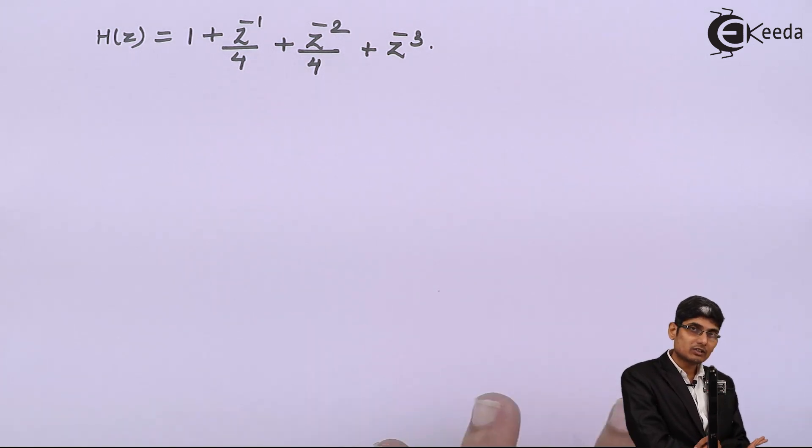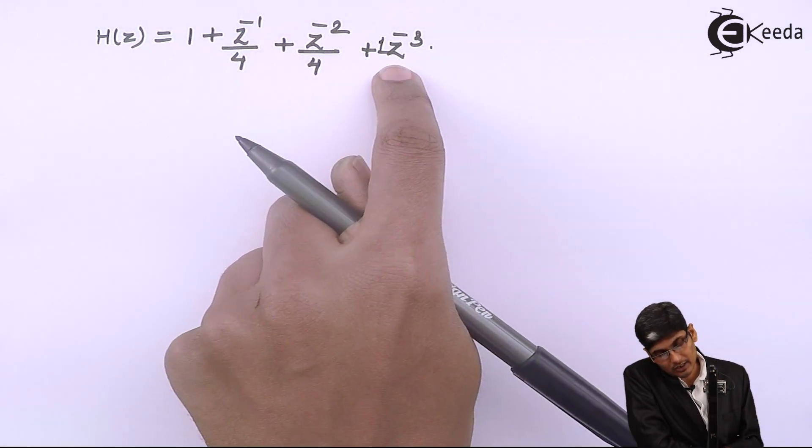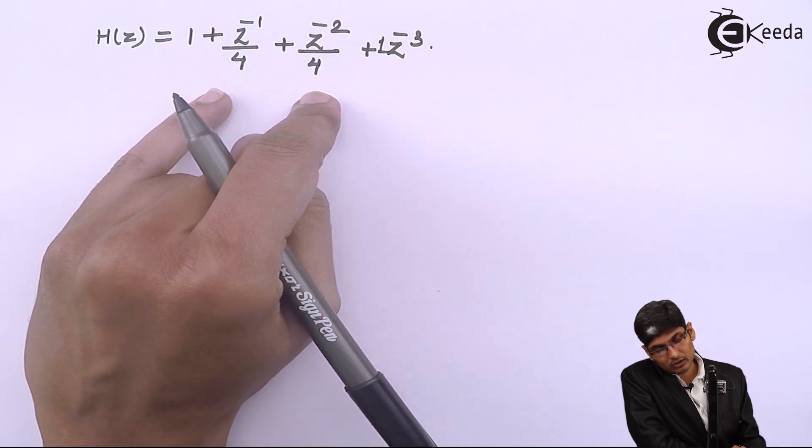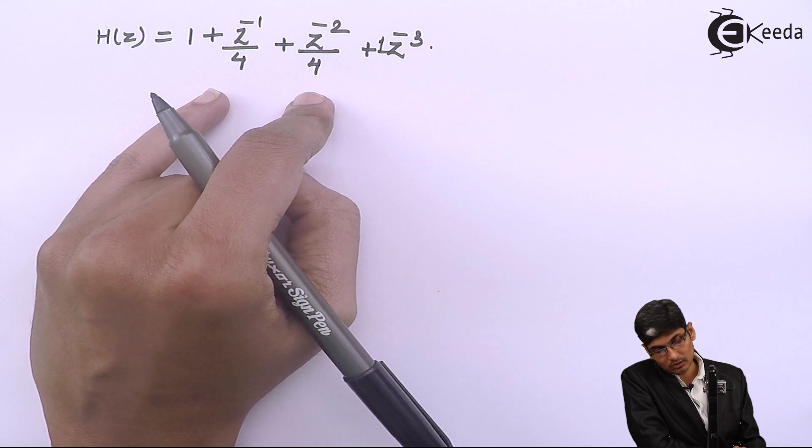Because it is given in H of Z, I do not need to actually apply an inverse Z transform. What we see over here is the coefficient of Z raise to minus 3 and Z raise to 0 is the same. And the coefficient of Z raise to minus 1 and Z raise to minus 2 are the same.